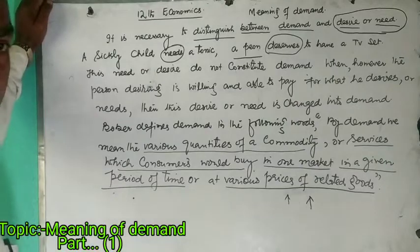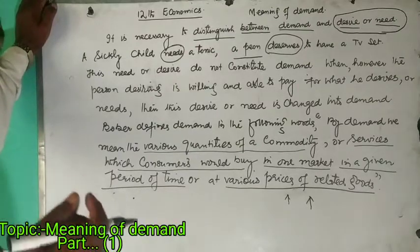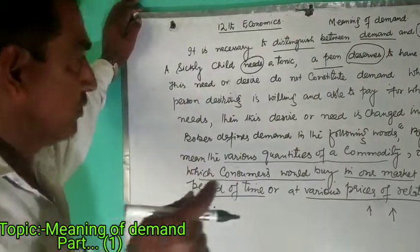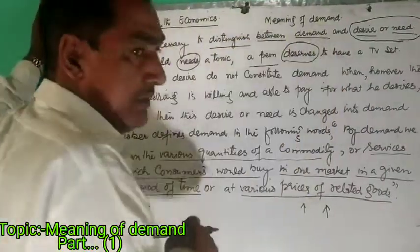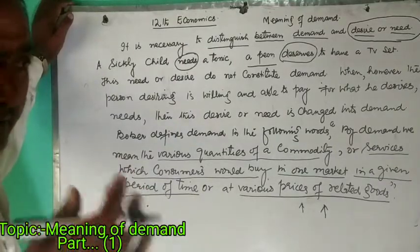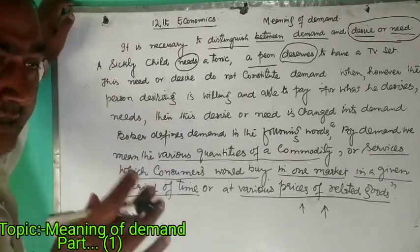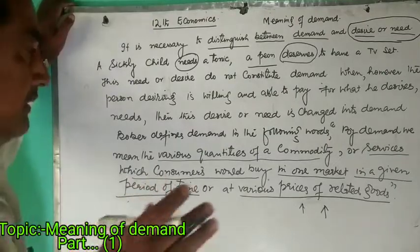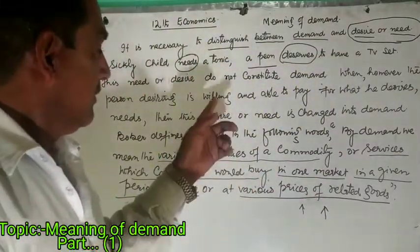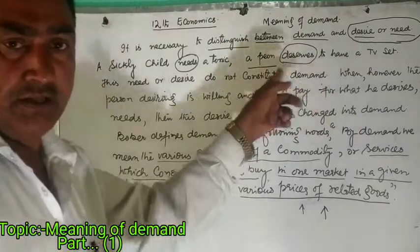It will also require demand. If we have a person who needs a tonic, or if he desires a TV set, but he is not willing or is not able to pay for the price of the commodity, we don't say that this is demand. Unless and until this desire or need is not backed up by the willingness and ability of the consumer to pay for it, this is not demand. Once he is willing and has an ability to pay for the price of the commodity, we say then that this desire or need is demand.